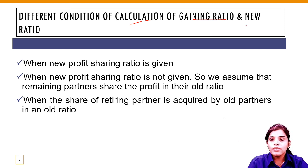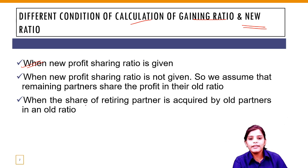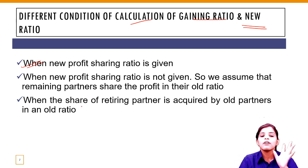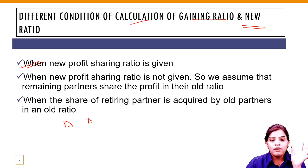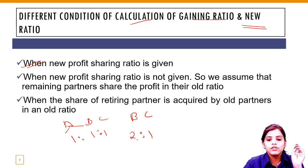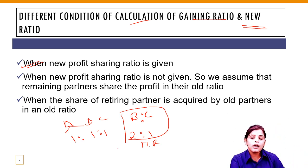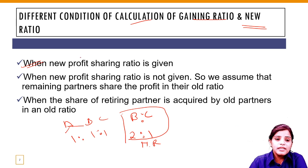Condition 1 — when new profit sharing ratio is given: सबसे easy condition यह है जब question में directly new ratio दे दिया जाता है। Example: A, B और C का current ratio था 1:1:1। A को retire करते हैं, तो B और C लाभ को 2:1 की ratio में बाँटेंगे। जब new ratio given है तो gaining ratio calculate करना बहुत easy हो जाएगा।